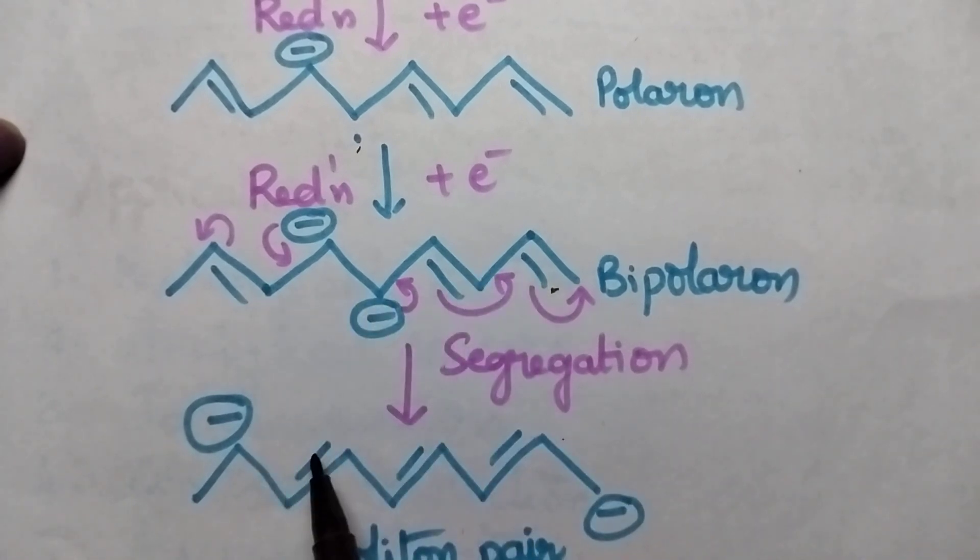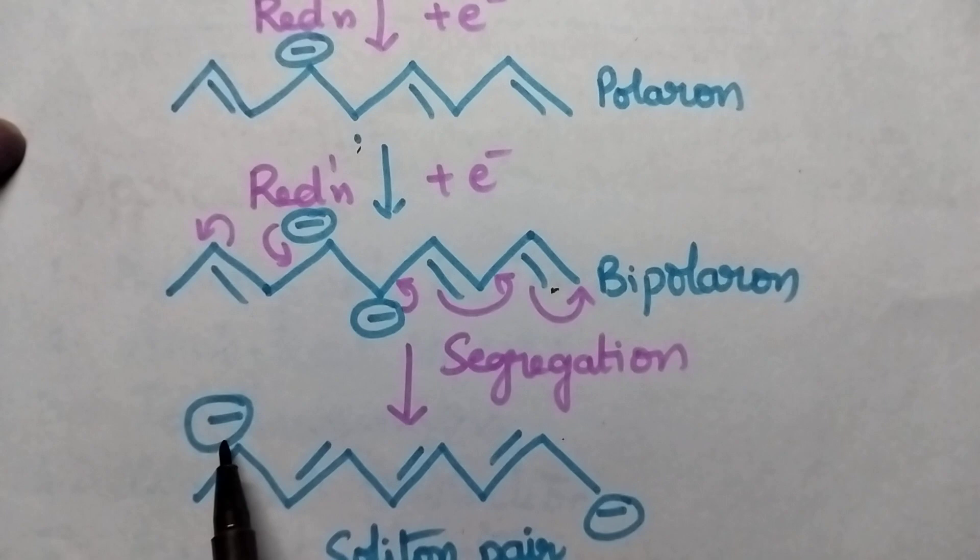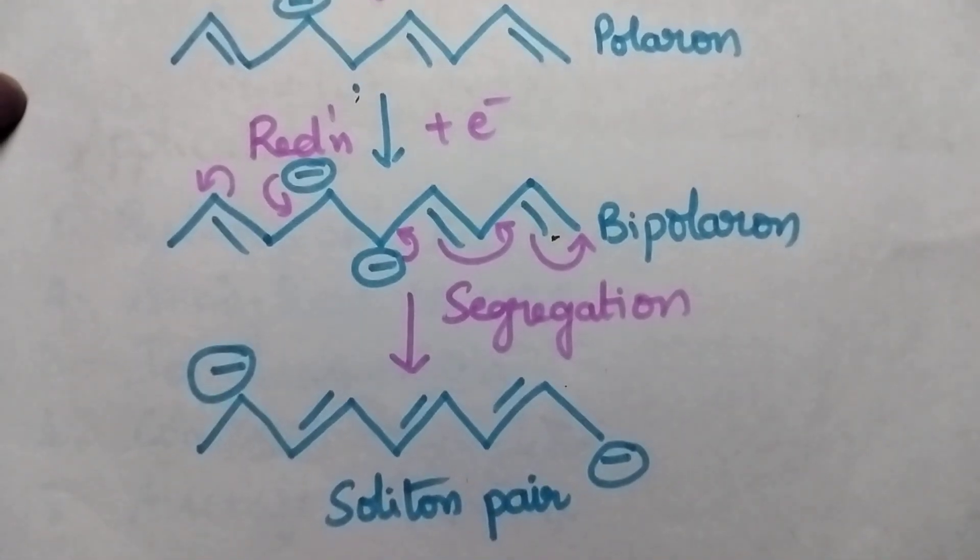You just change the position of the double bond and you put negative charge at the end carbon atom and on the opposite carbon atom. Then it results in the formation of soliton pair.